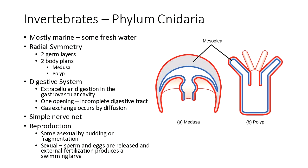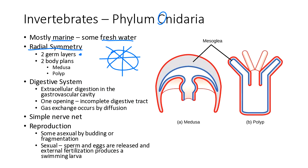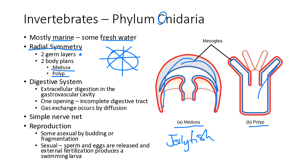Phylum Cnidaria (the 'c' is silent): mostly marine, with a few freshwater species, but all aquatic. These have radial symmetry. They don't have all three germ layers but do have two. They come in either a medusa body plan — like a jellyfish, with the bell shape viewed from above — or a polyp body plan, where tentacles extend upward, like a sea anemone. Some species may alternate between both body plans during their life cycle.